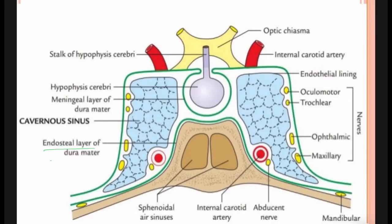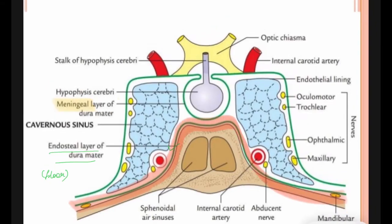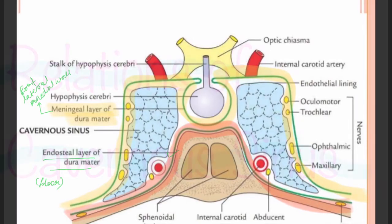The floor is formed by the endosteal layer of dura mater. The lateral wall, medial wall, and the roof are formed by the meningeal layer of dura mater.